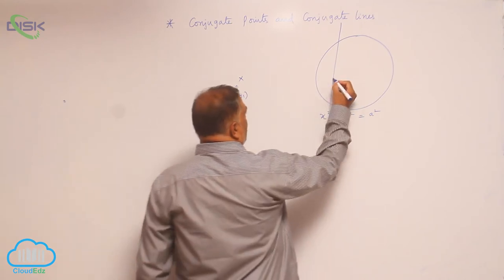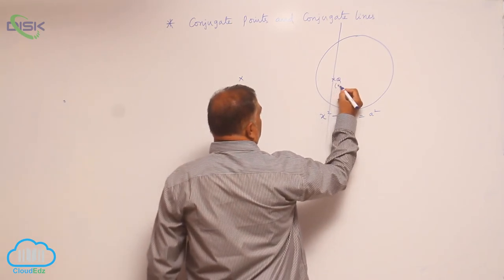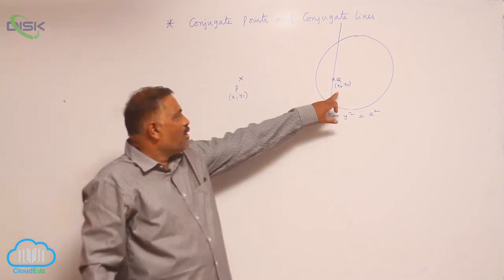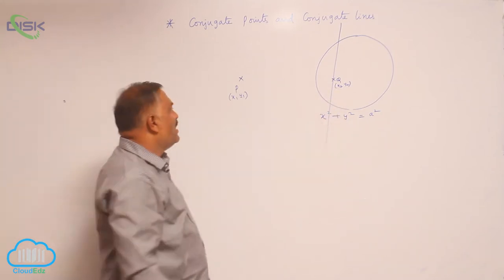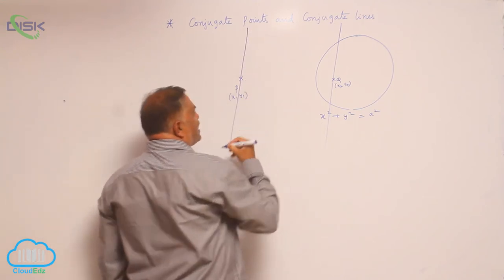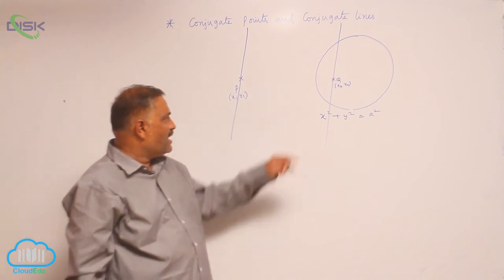Suppose you take another point q x2 y2 on this one. Then, since the point lies inside the circle, its corresponding polar lies outside the circle. We are able to see very clearly.